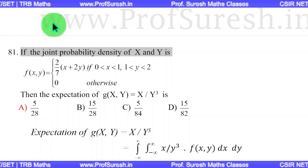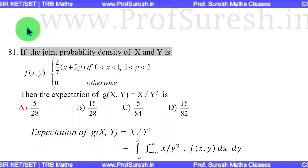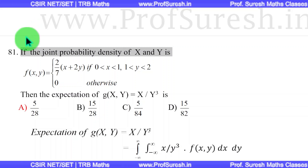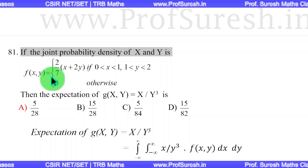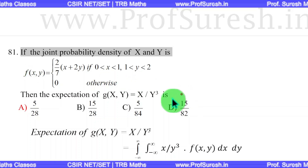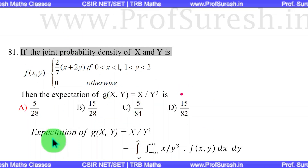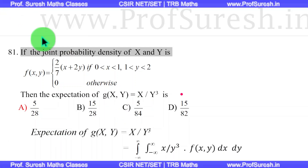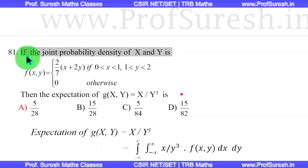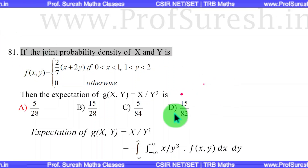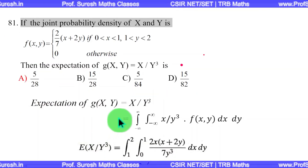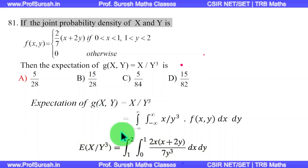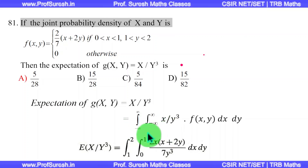Find the expectation of g(x, y) = x / y³. So g(x, y) is x divided by y³. The expectation of g(x, y) = x/y³ is computed using the general formula for expected value of a function of two continuous random variables.